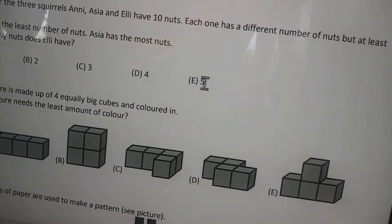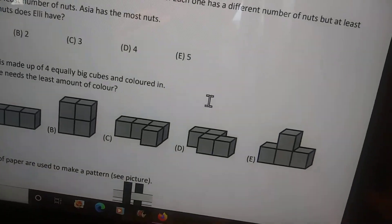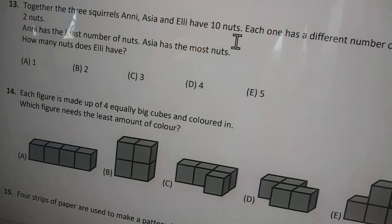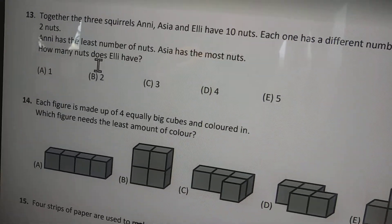What if Eli has five nuts? This one is the easiest because to equal ten, it's five plus five. Asia has to have more than Eli, so it can't be it. The answer choice is obviously C. Make sure you guys write that down. Now we're going to move on to number fourteen.